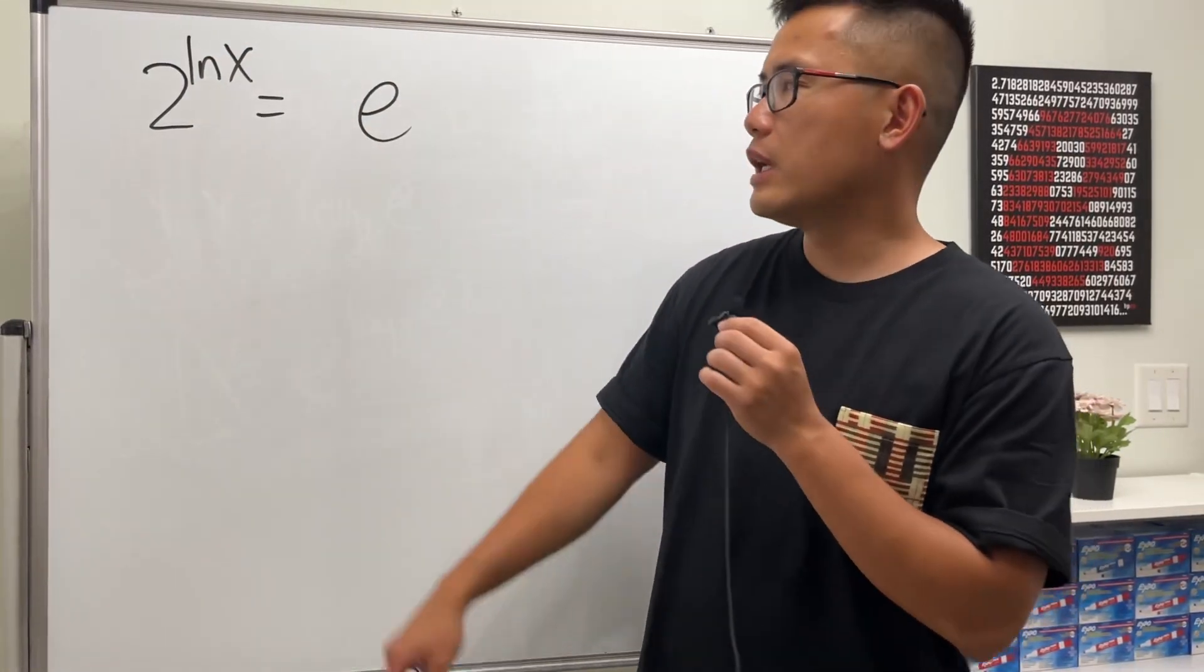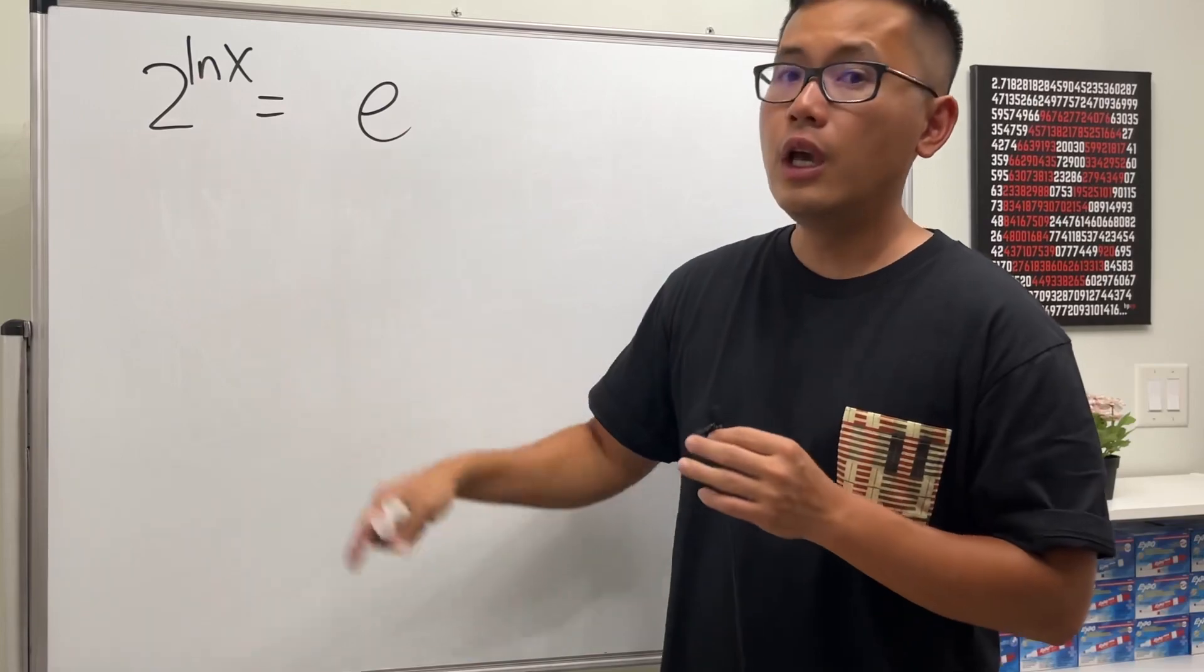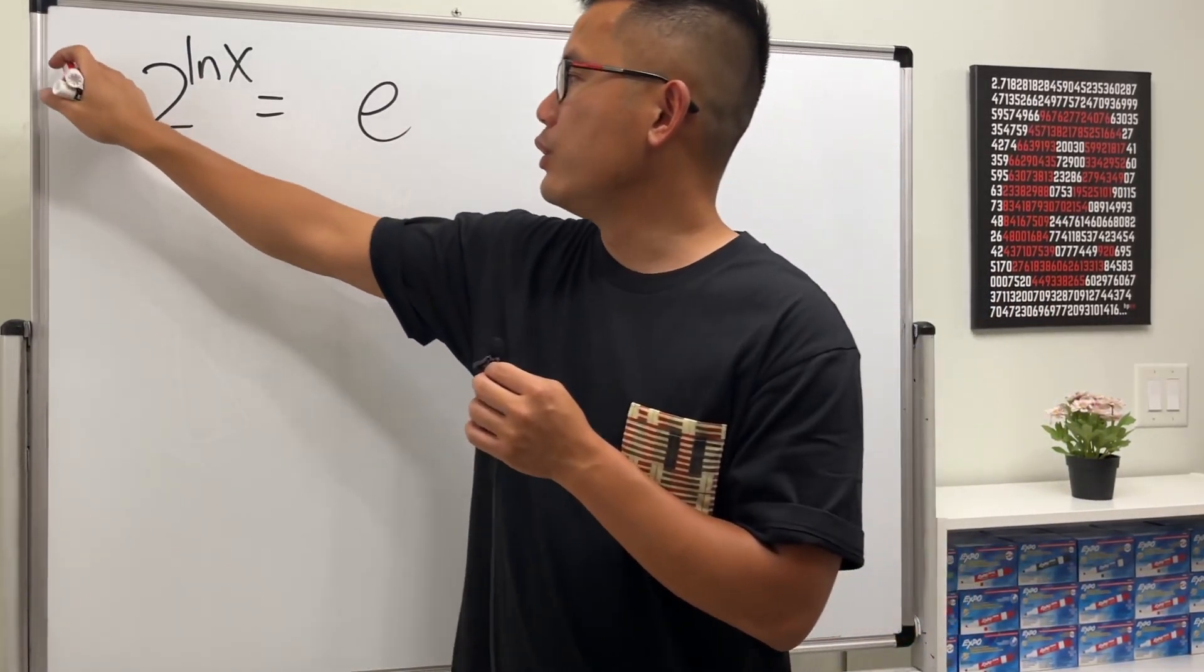I want to show you a very interesting equation. Here we have 2^(ln x) = e. First thing first, we're going to get rid of this 2, and we can do so by taking log base 2 on both sides.